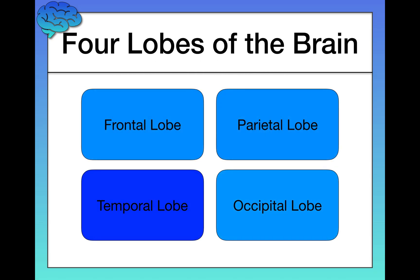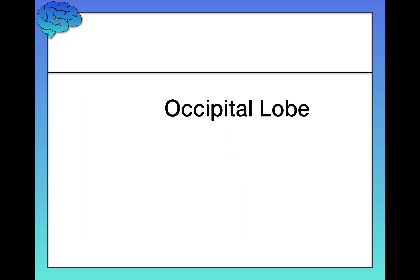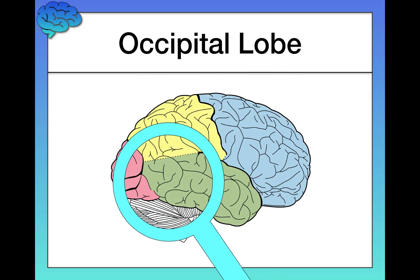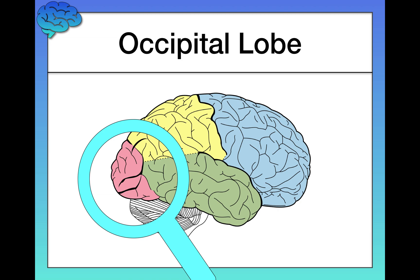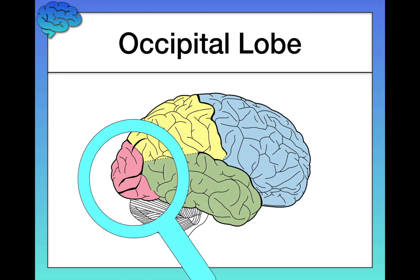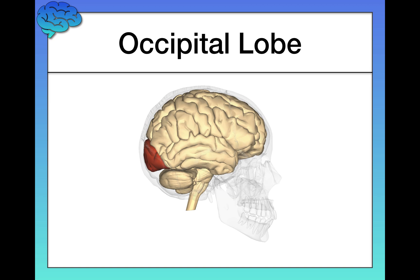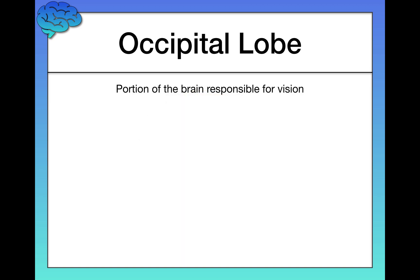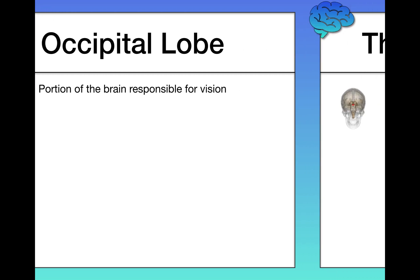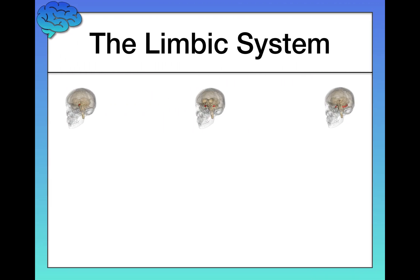Last but not least, let's talk about the occipital lobe. It sits at the very back of the brain. It's a relatively small but still sizable portion of the brain, and it is responsible for vision and pretty much only vision. This is a testament to how visually oriented humans are — we have a relatively large portion of our brains dedicated entirely to the important skill of being able to see.